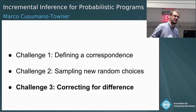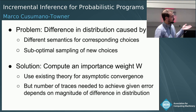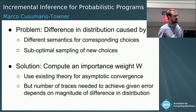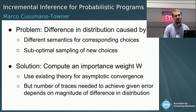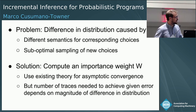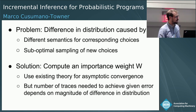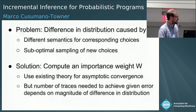Since our procedure doesn't actually sample from the target distribution, we need to correct for that difference. The difference can be caused by different semantics between corresponding choices, or suboptimal sampling of new choices. Our solution draws on importance sampling from statistics — we compute an importance weight w. This allows us to use existing theory to give asymptotic convergence guarantees, such that a large weighted collection of translated traces of Q converges to the same result as generating traces directly from Q. The efficiency depends on the magnitude of the difference between the two distributions.